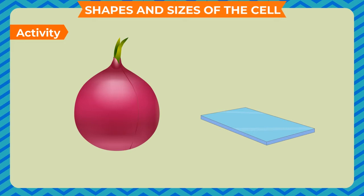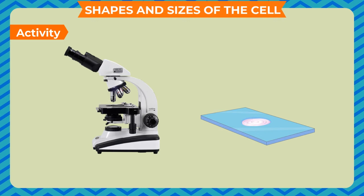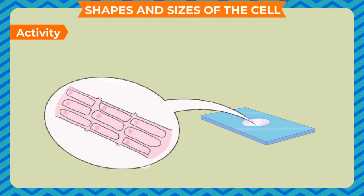In order to observe the basic components of the cell, take an onion bulb. Remove the dry pink covering. You can easily separate these from the fleshy white layers of the bulb. Place a small piece of thin onion peel in a drop of water on a glass slide. The thin layer can be cut into smaller pieces with the help of a blade. Add a drop of methylene blue solution to the layer and place a cover slip on it. Ensure that there are no air bubbles on the cover slip. Observe the slide under microscope. You can identify the cell membrane, the cytoplasm and the nucleus.